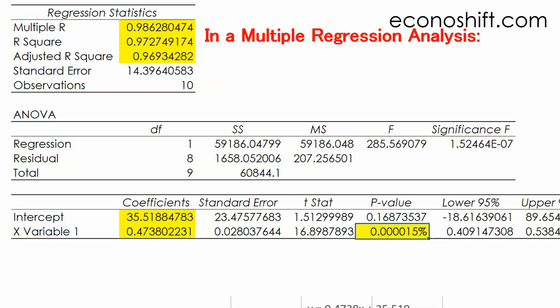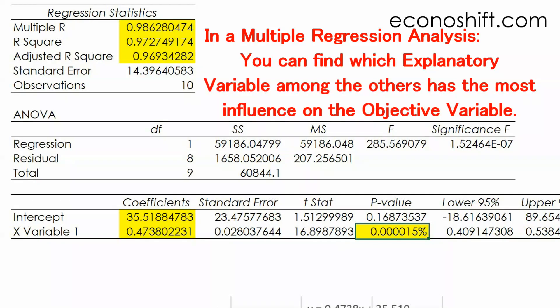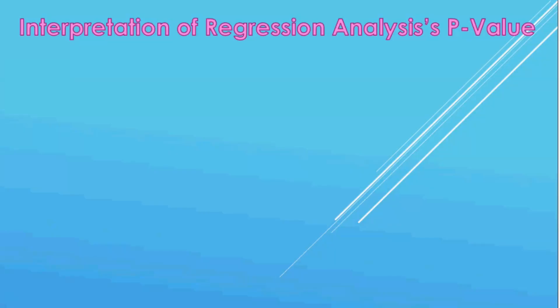In a multiple regression analysis, this p-value is very important and you can find which explanatory variable among the others has the most influence on the objective variable. For a little more detail, the p-value is the probability of a null hypothesis.